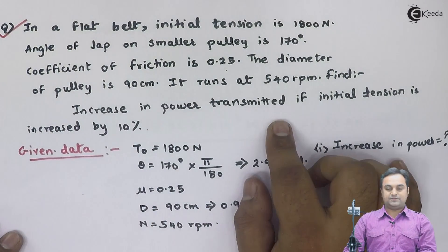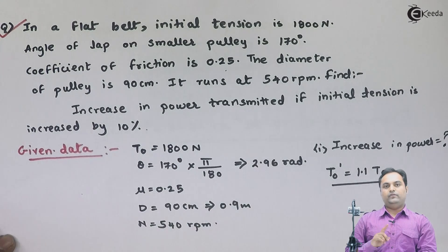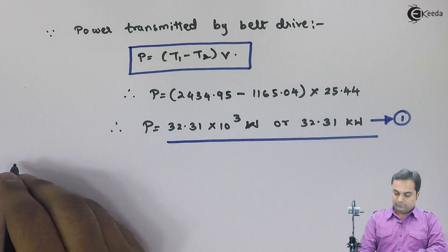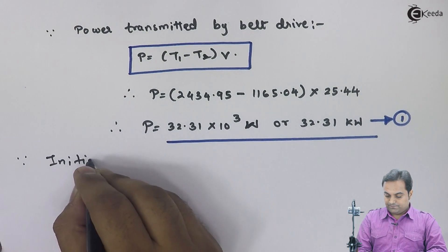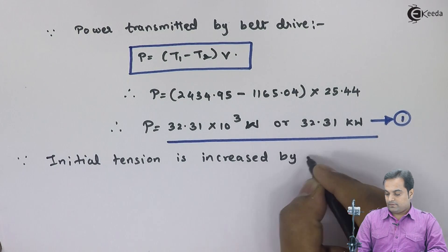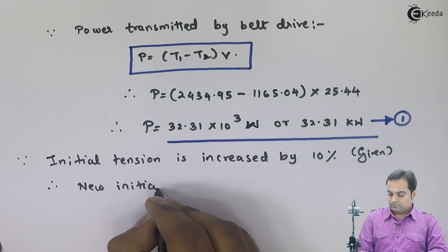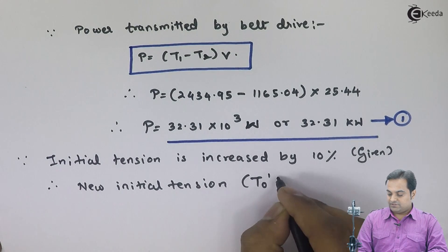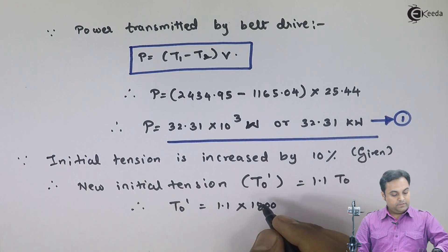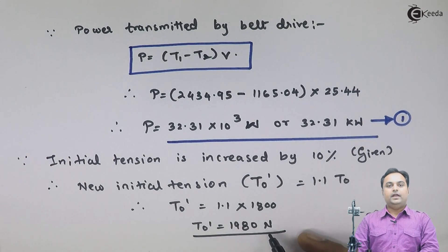Now, since the initial tension is increased by 10%, the new initial tension t0 dash = 1.1 × t0 = 1.1 × 1800 = 1980 Newton. I will now use this new initial tension to again calculate the new t1 dash and t2 dash values.